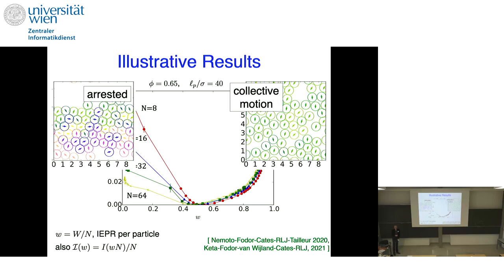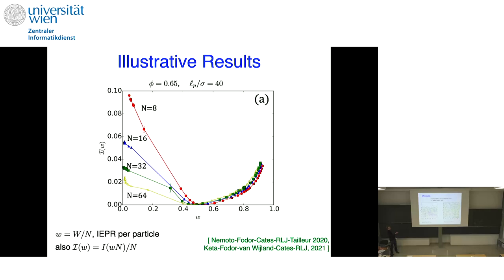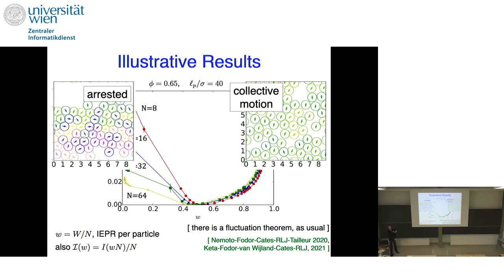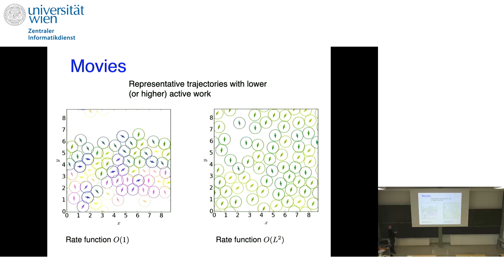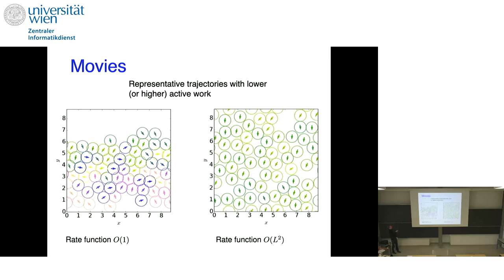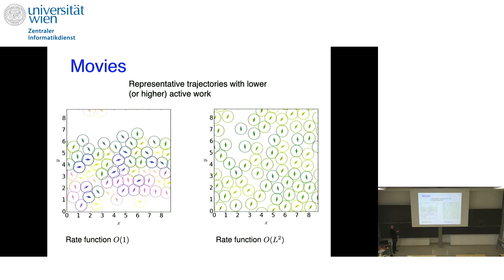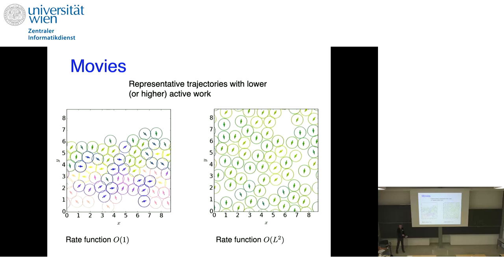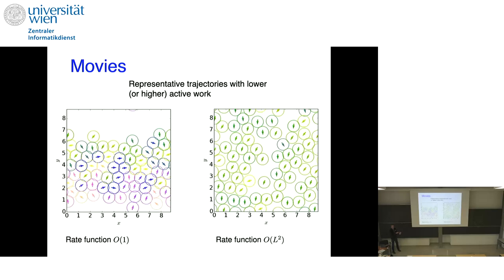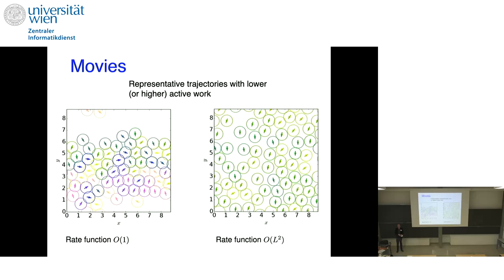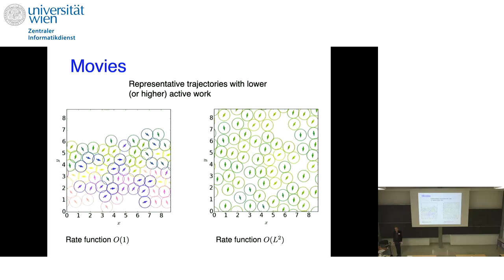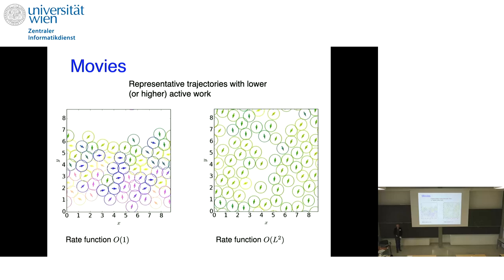There is a fluctuation theorem, so everything that happens to the left of zero can be extrapolated from the curve. On the collective motion side, particles swim in a particular direction. On the arrested side, the guys on the outside push everybody inwards, confining everyone into a corral where they can't dissipate because they can't move. The collective motion phase is like everyone agreeing to go in the same direction — a good way to suppress collisions.